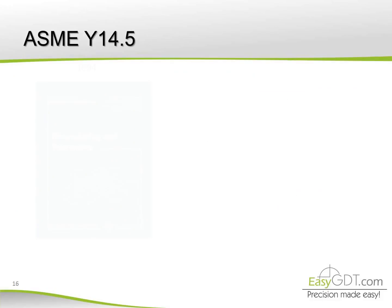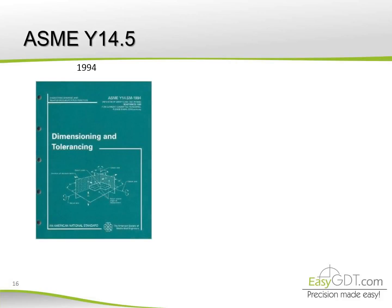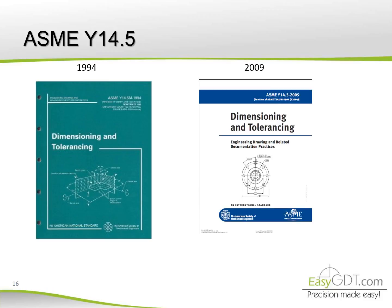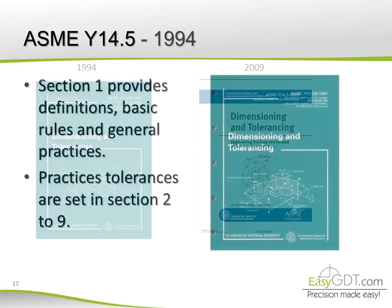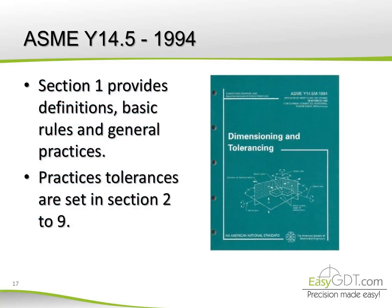The standard ASME Y14.5, Dimensioning and Tolerancing, establishes uniform practices to define and interpret dimensions and tolerances to be used on engineering drawings. The two latest editions are from 1994 and 2009. The basic difference is that new concepts were added — modifiers and rules — but generally they are quite similar. Since this is a basic level course, we'll focus on the 1994 edition because it is the most used.